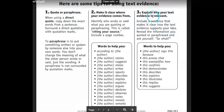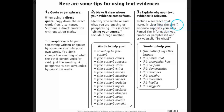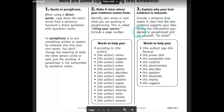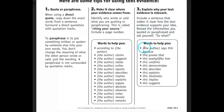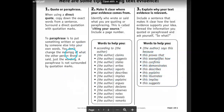Explain why your text evidence is relevant — why it matters, why it's important, why it's good evidence for your answer. Include a sentence that makes it clear how the text evidence supports your idea. You can use phrases like: 'This tells me that,' 'This shows me that,' 'This proves that,' 'This exemplifies how,' 'This confirms,' 'This describes,' 'This suggests.'